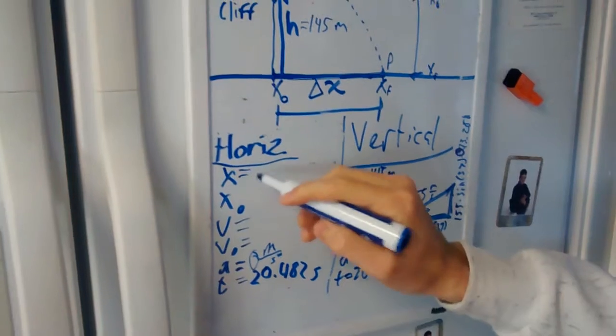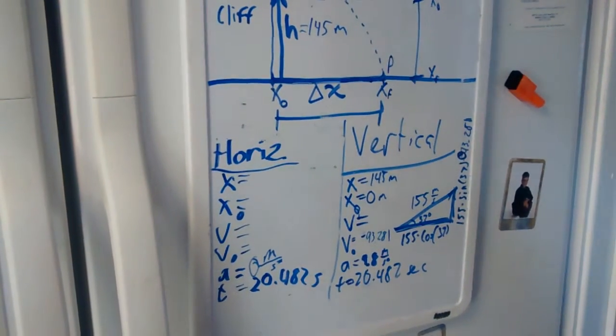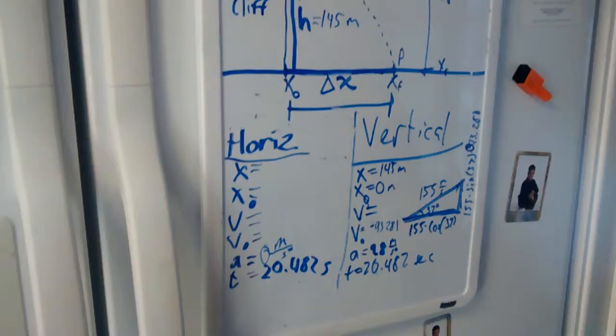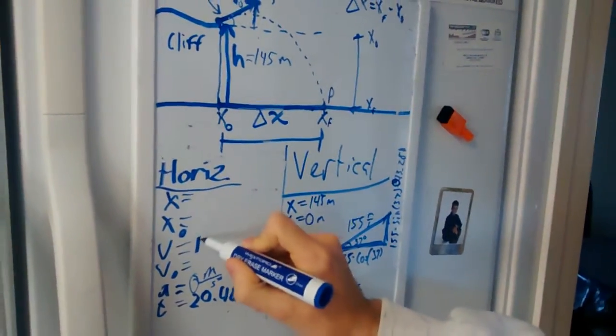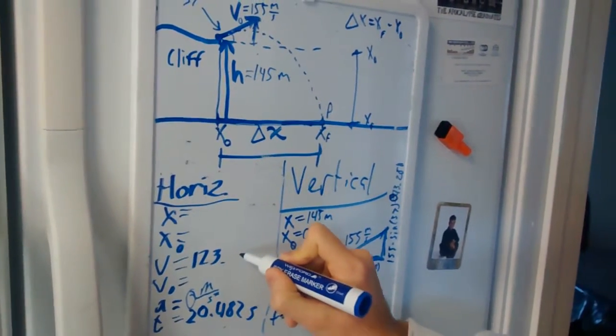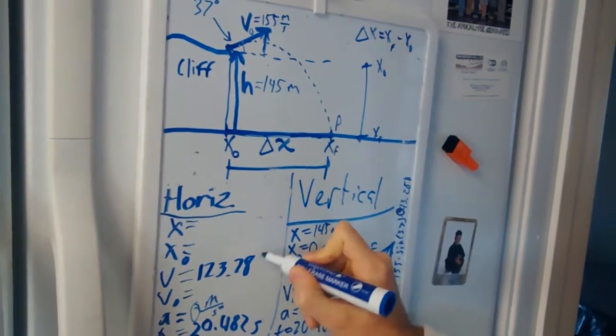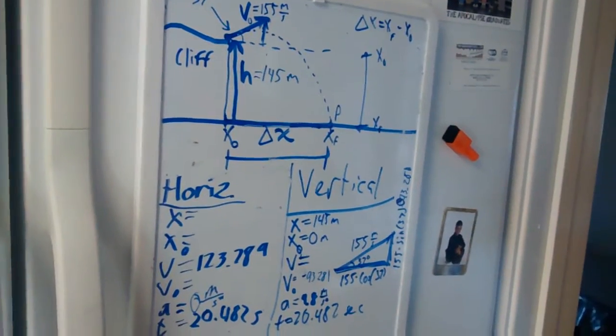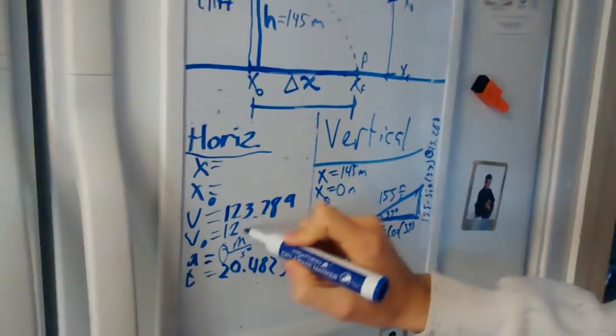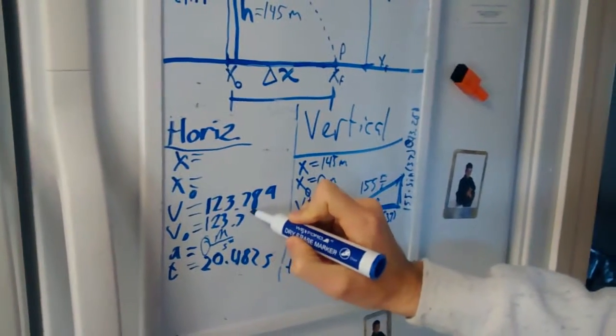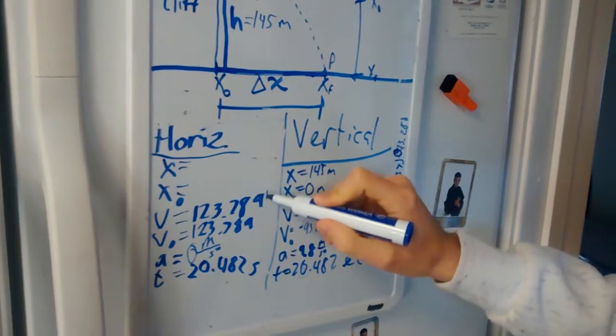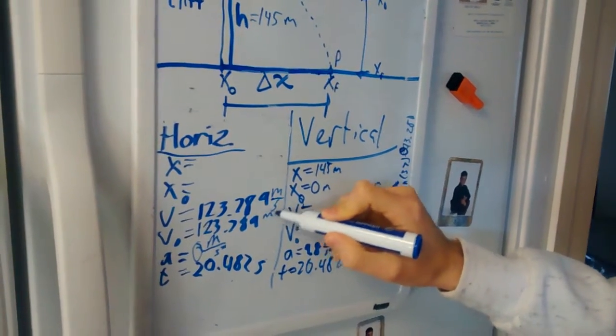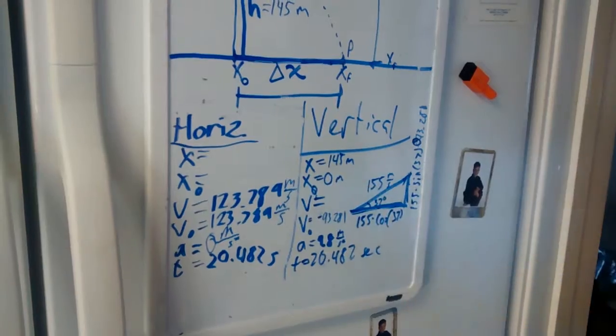Next we have velocity of 123.789. And we know that there is 0 acceleration, so velocity is going to be the same before and after. 123.789 meters per second. Sorry about my handwriting here.